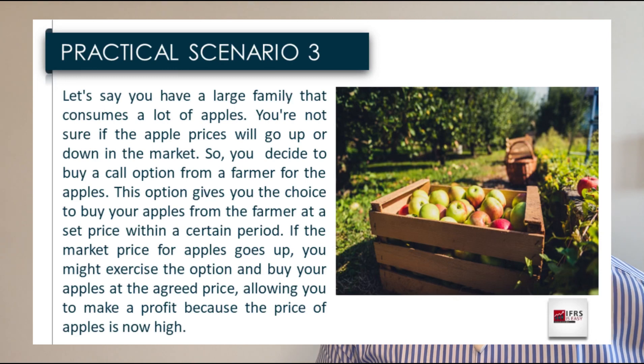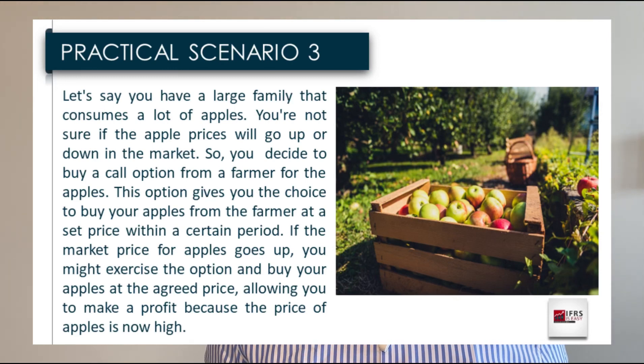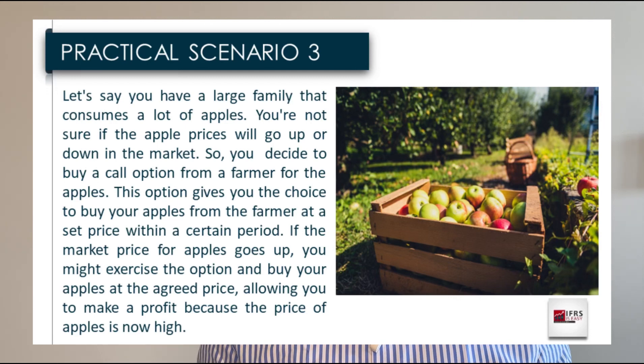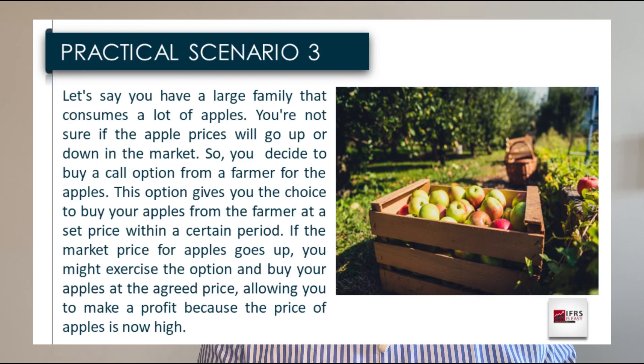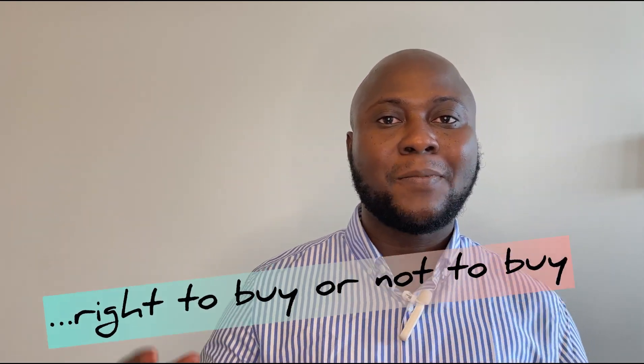For example, say you have a large family that consumes a lot of apples and you are unsure if apple prices will go up or down. You buy a call option from a farmer at a set price within a certain period. If the market price for apples goes up, you exercise the option and buy at the lower agreed price, making a profit relative to the market. If prices fall, you can simply buy cheaper in the market and let the option lapse — you are not obligated to proceed.